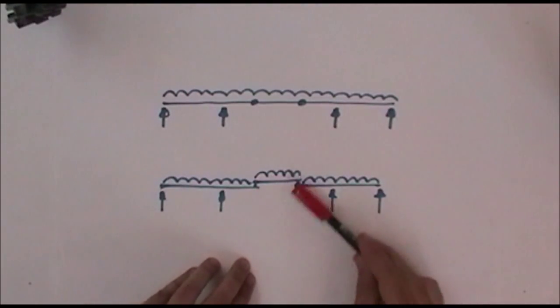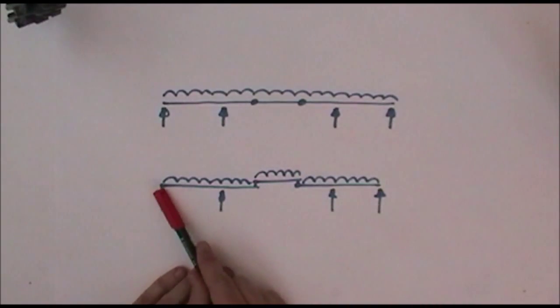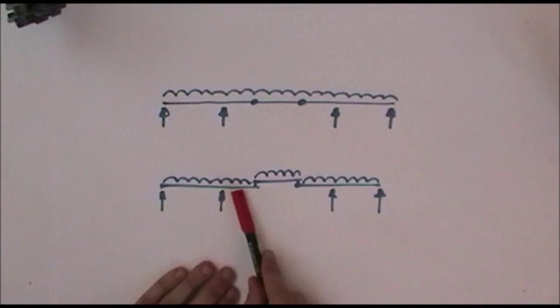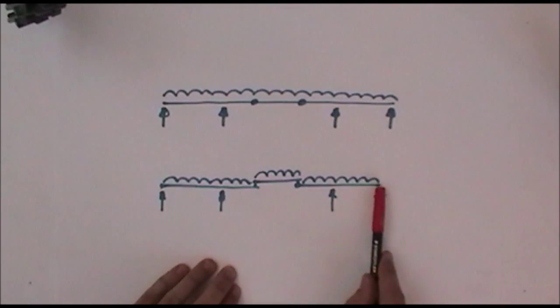If we consider the structure beneath, which is identical in every way to the structure above, it might have been that this structure was built by cantilevering out this beam, supporting this beam on the left on two supports and cantilevering it out, supporting this beam on these two supports, cantilevering it out.